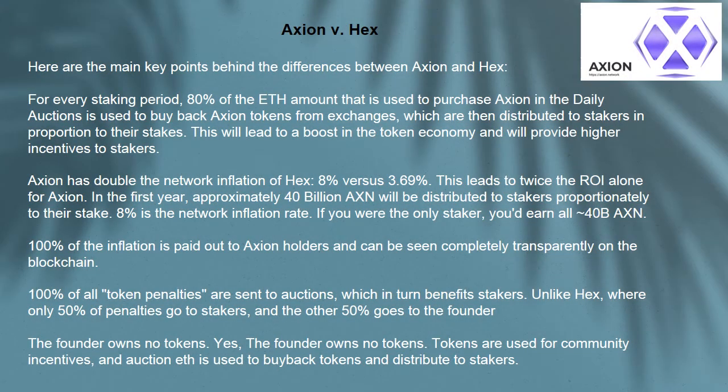Axion vs HEX. Here are the main key points behind the differences between Axion and HEX. For every staking period, 80% of the ETH amount used to purchase Axion in the daily auctions is used to buy back Axion tokens from exchanges, which are then distributed to stakers in proportion to their stakes. This will lead to a boost in the token economy and will provide higher incentives to stakers.